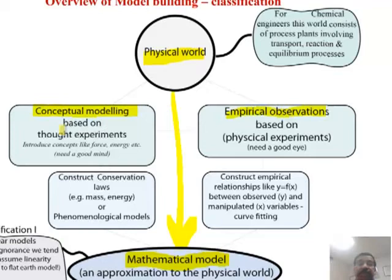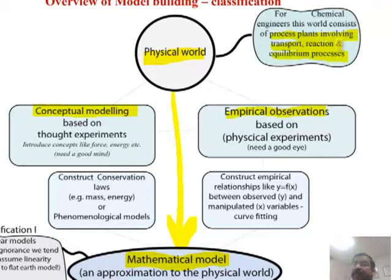For us as chemical engineers, that physical world consists of process plants involving transport, reaction, and equilibrium processes. You will take courses on fluid mechanics, heat transfer, separation processes, and reactor engineering. In each course you will understand the physics more deeply, develop mathematical models, and develop graphical or numerical solution procedures. In that respect, this course should be helpful in getting the solution part — the physics you will examine in greater detail in each specialized course.